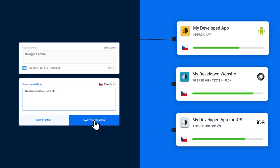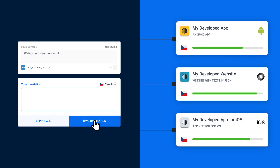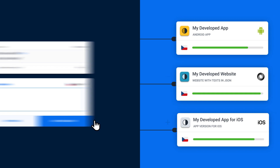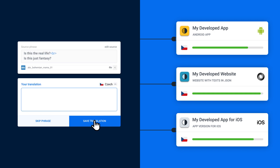It's simple. Just choose which of your apps should be connected and activate the Connected Apps Add-On. Your translations are then seamlessly shared across all selected apps, saving you time and money.